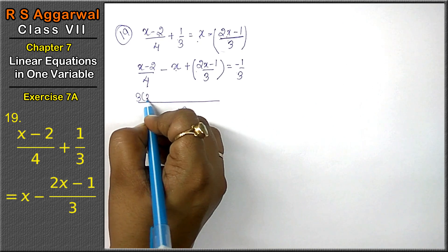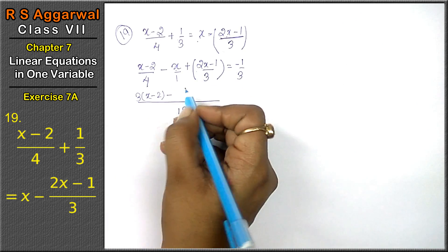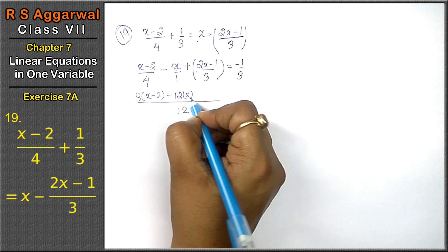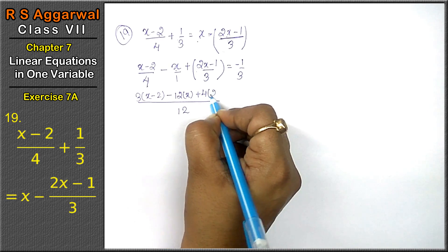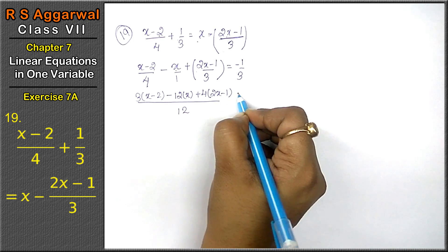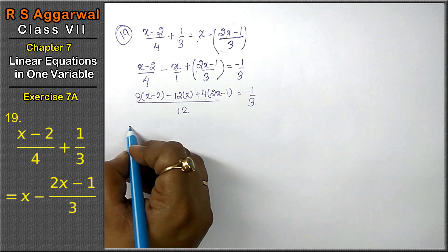3 times (x-2), minus is nothing so 1, so 12 times x plus 3 fours are 12, so 4 times (2x-1) = -1 upon 3. Now let's open the bracket: 3x - 6 - 12x + 8x - 4.